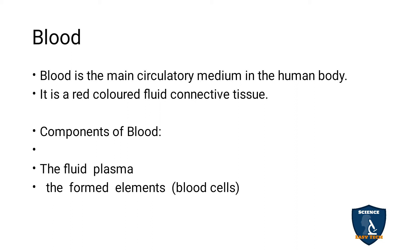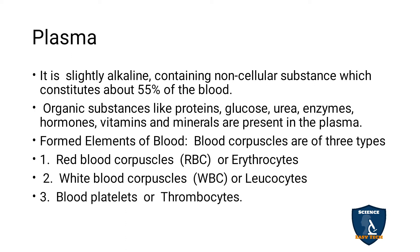Components of the blood: the blood components are plasma and the blood cells, which are formed elements. Plasma is fluid in nature and slightly alkaline, containing noncellular substances which constitute about 55% of the blood. Organic substances also seen in plasma — that is proteins, glucose, urea, enzymes, hormones, vitamins and minerals are present in plasma.